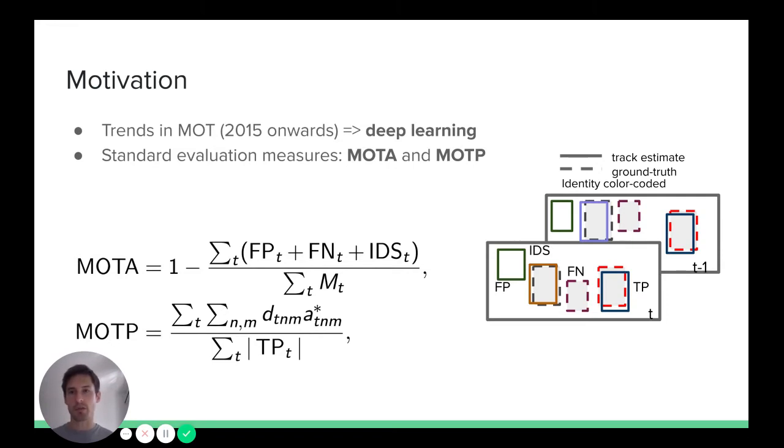To train such deep multi-object trackers, the question is what loss function should we optimize? Loss functions should ideally strongly correlate with evaluation measures used to evaluate multi-object tracking performance.